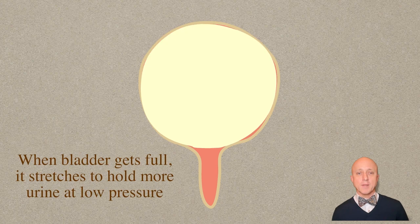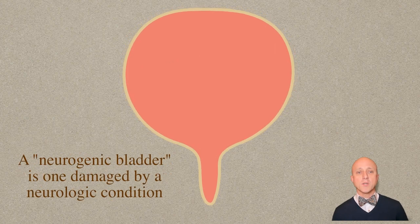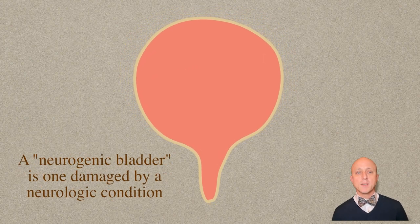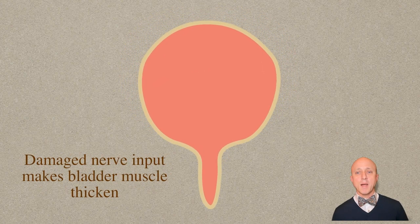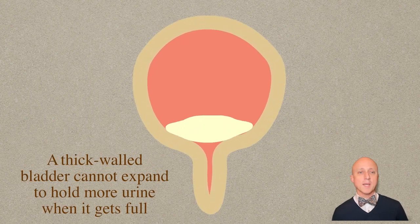A neurogenic bladder is one damaged by a neurologic condition like spina bifida, spinal cord injury, or cerebral palsy. Damaged nerve input makes the bladder muscle thicken, and a thick-walled bladder cannot expand to hold more urine when it gets full.